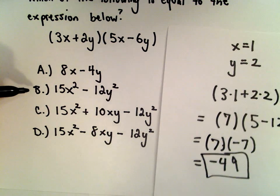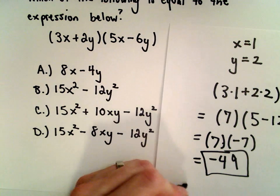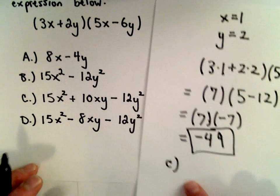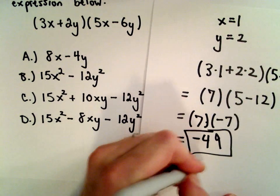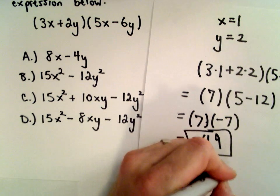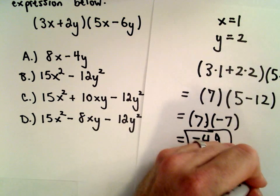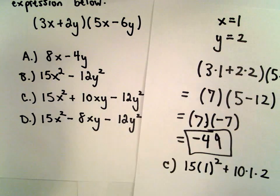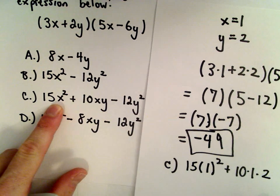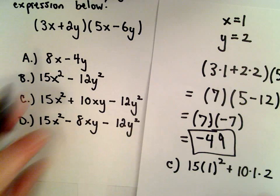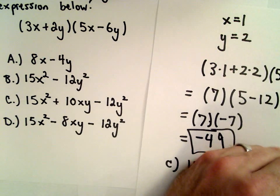Suppose I went down to part C and checked that. I would have 15 multiplied by 1 squared plus 10 multiplied by 1 multiplied by 2, minus 12 times 2 squared. Does that equal negative 49?